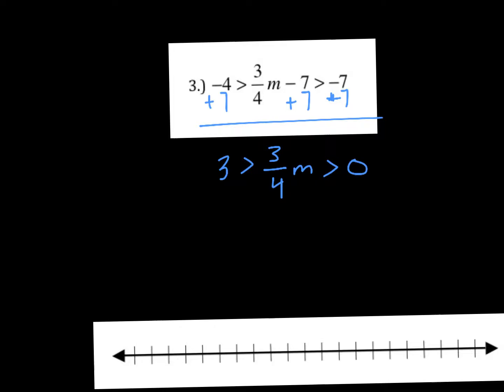So this is really three fourths times M. So we would technically need to divide by three fourths to undo that operation. So we have to remember that dividing by a fraction is really multiplying by the reciprocal. So we're going to multiply all three sections by the reciprocal of three fourths, which is four thirds.